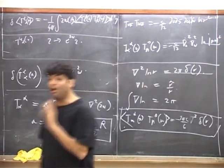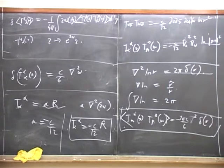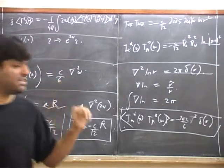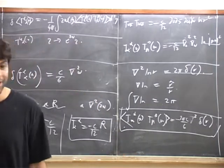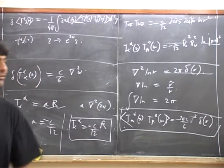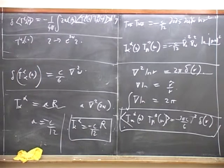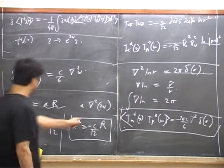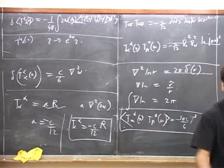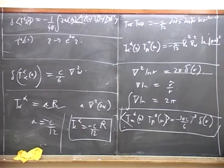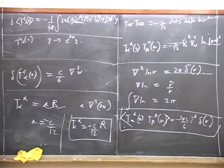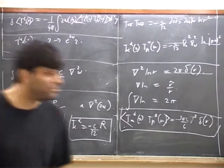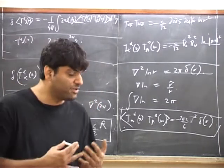So we've concluded — though with the wrong minus sign — that T^alpha_alpha equals minus C/12 times R. This is a completely universal result: the only thing about the conformal field theory it depends on is the central charge. All we used here is the left-moving central charge — the quantity appearing in the OPE of T with T. But we could have done the same calculation with the right-moving central charge and gotten the same answer.